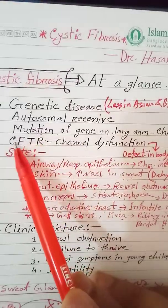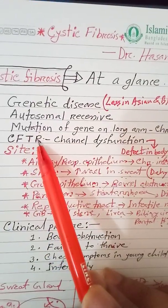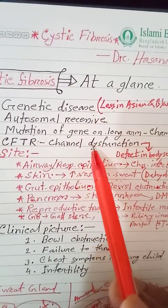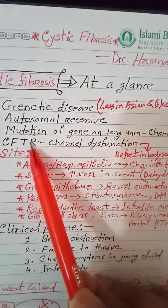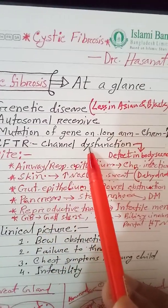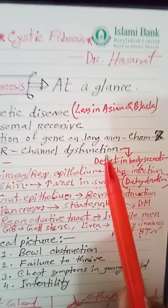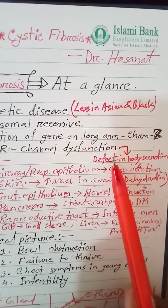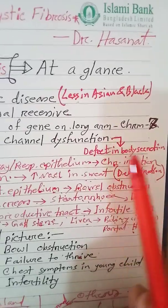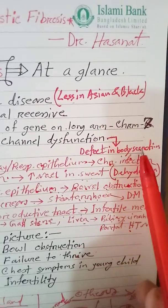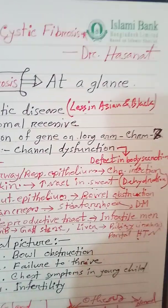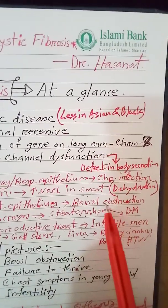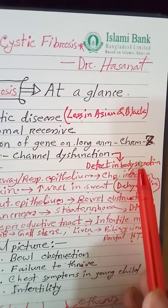If the CFTR gene is defective, then the channel is dysfunctional. The channel is a protein, and if the chloride channel is dysfunctional, the transmembrane conductance is defective. So cystic fibrosis is primarily a defect in body secretion.